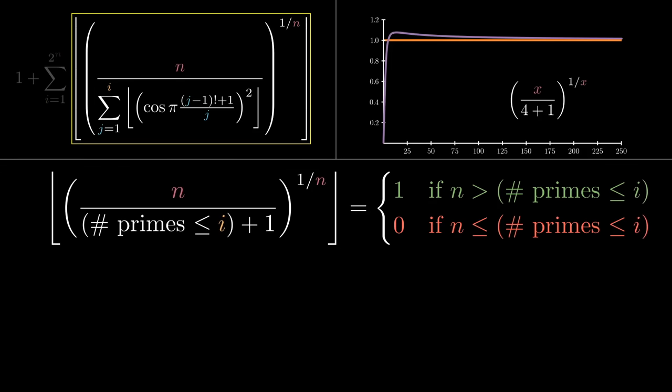This lets us answer the question, is the number of primes up through i less than n? Of course, when we go to use Willans' formula to compute the nth prime, it's not n that will change. It's i that will change, because of the summation we're about to get to. So let's rewrite the conditions in this equation so they look more like conditions on i rather than n.